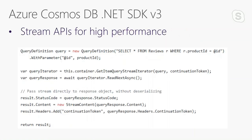The .NET SDK v3 also introduces streaming APIs. Previous versions would always serialize and deserialize data on each request, incurring overhead. The streaming APIs cut down on that by streaming data over the wire. So if you want to get data from a container and pass it on to something else, you can use the streaming API without the overhead of serialization and deserialization in between.